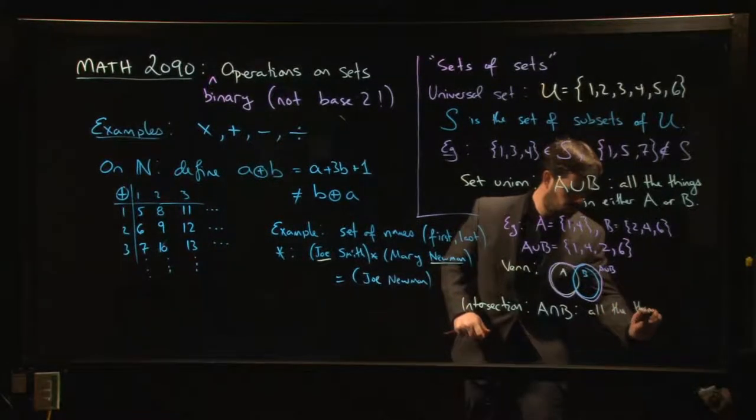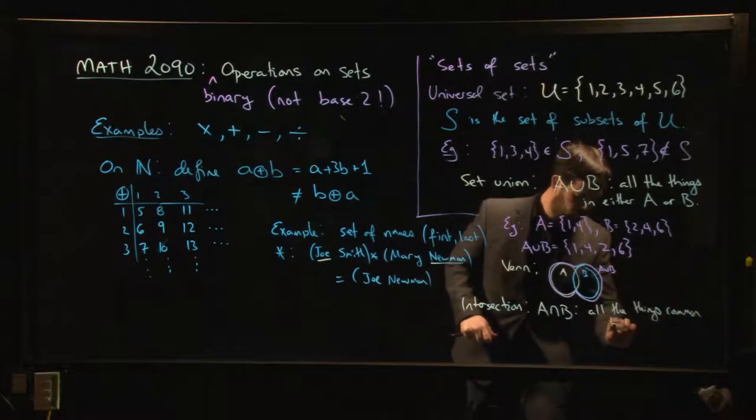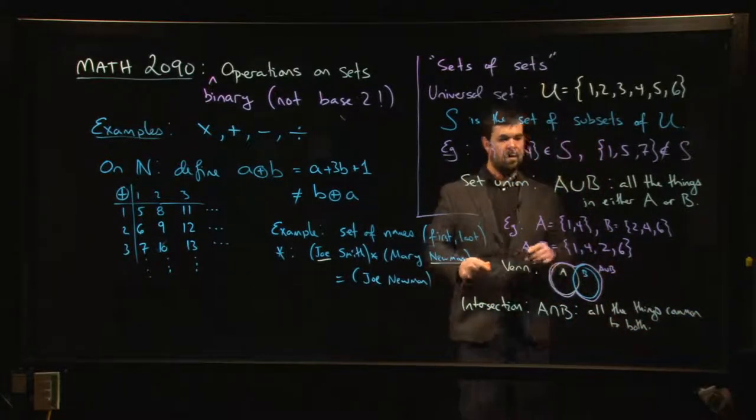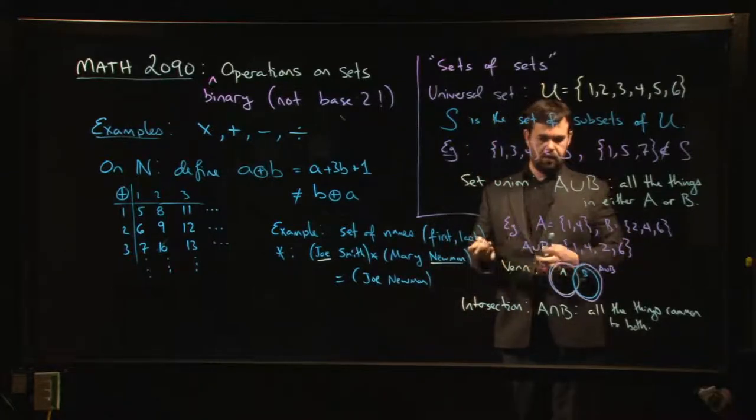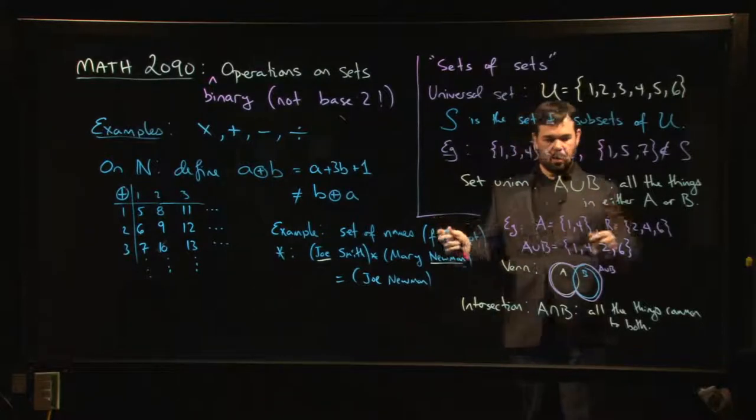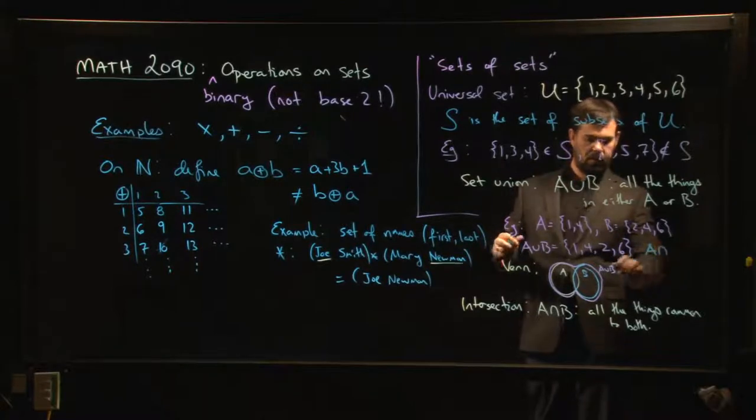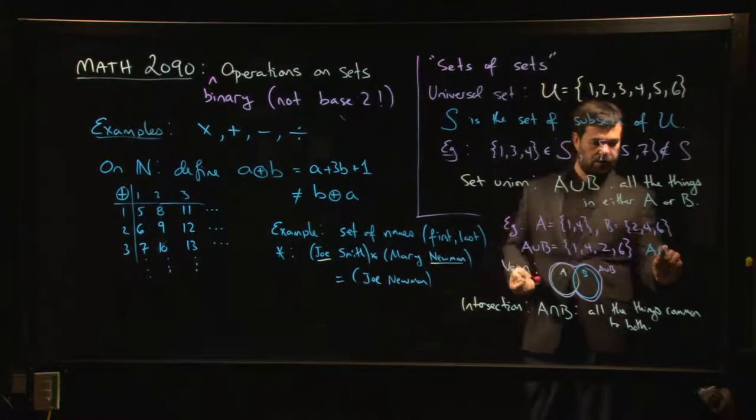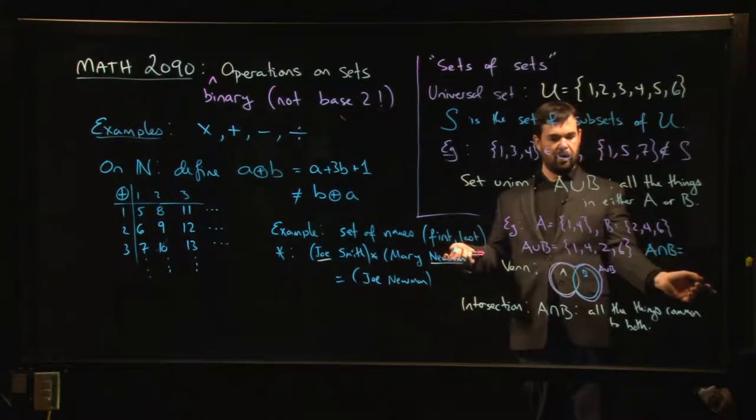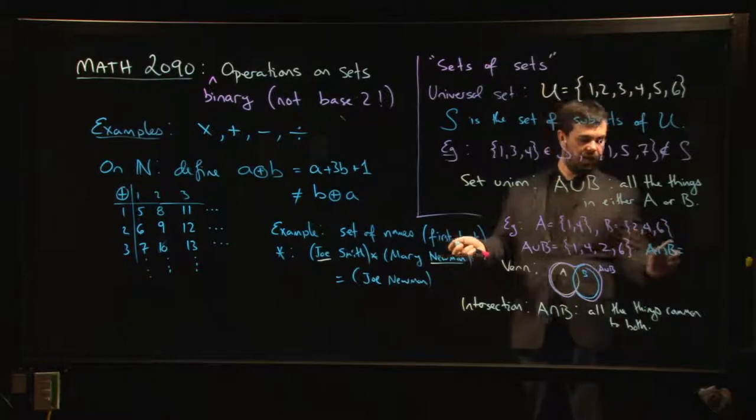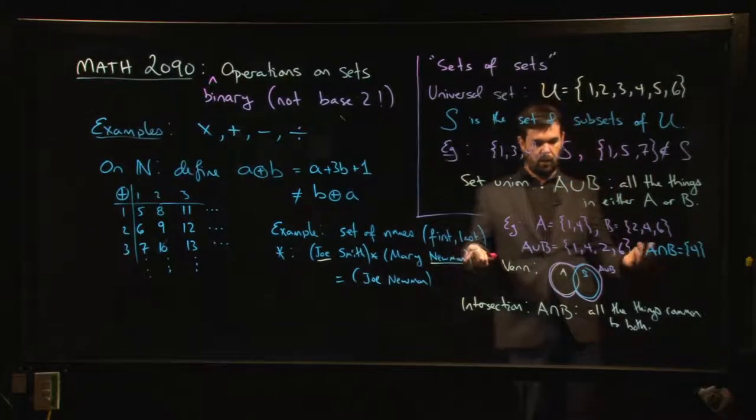So if I return to this example here, the intersection - I'm looking for all the things that belong to both sets simultaneously. Unions always get bigger, intersections generally get smaller because you throw away anything that the two sets don't have in common. And in fact, the only thing that they have in common is four, so you get a set containing just a single element of four.